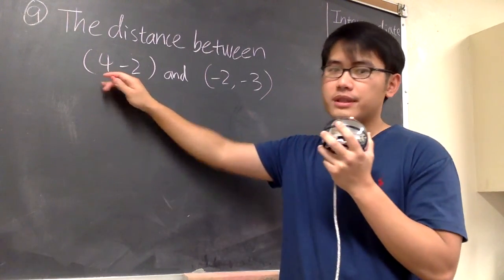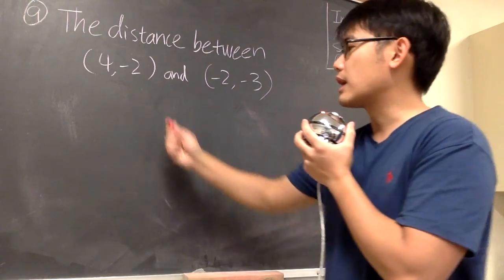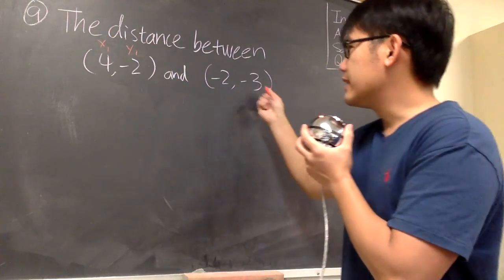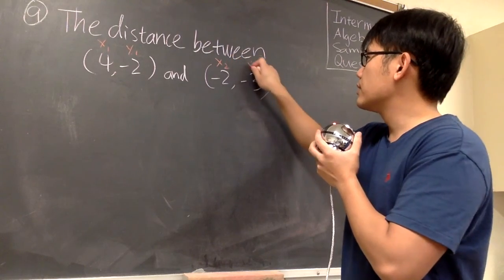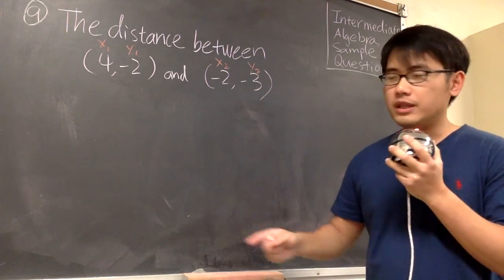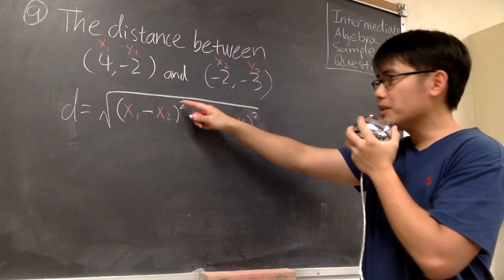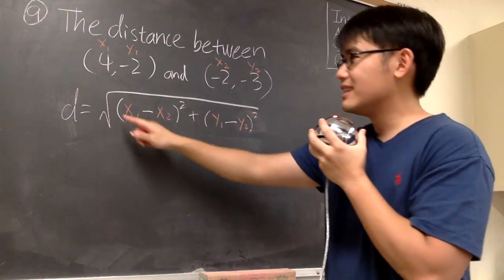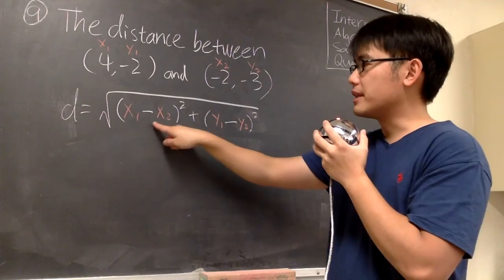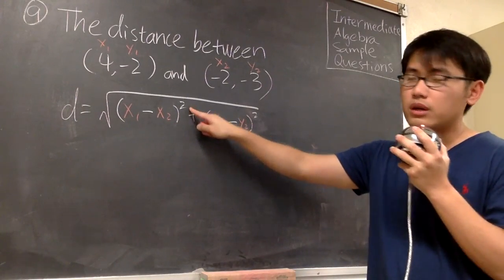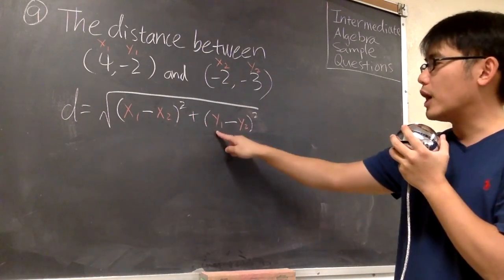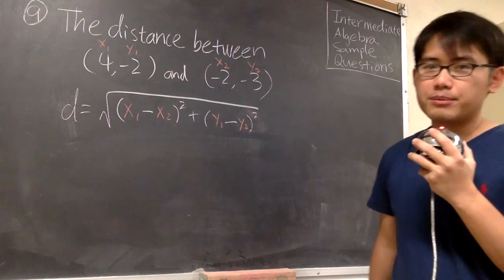This is our first point. Let's label this as x1, y1. And then the second point, we will have x2, y2. And this is the formula that we need right here. The formula says the distance between two points is the square root of (x1 minus x2) raised to the second power, plus (y1 minus y2) raised to the second power.